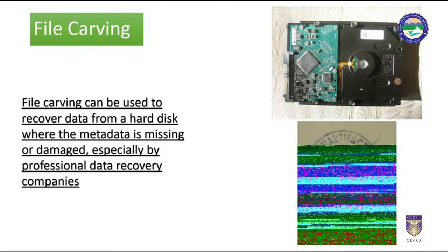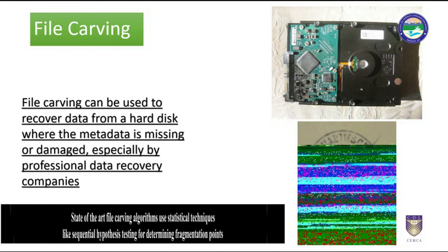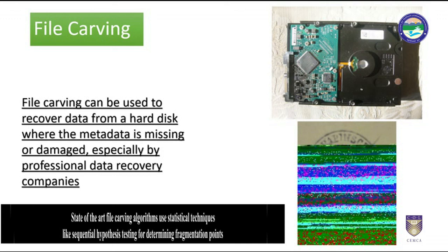With each fragment containing a number of contiguous clusters storing one part of the file data, obviously large files are more likely to be fragmented. File carving is a highly complex task with a potentially huge number of permutations to try. To make this task tractable, carving software typically makes extensive use of models and heuristics — necessary not only for execution time but also for the accuracy of results. State-of-the-art file carving algorithms use statistical techniques like sequential hypothesis testing for determining fragmentation points.